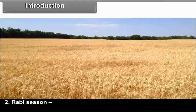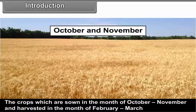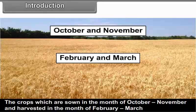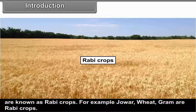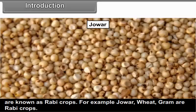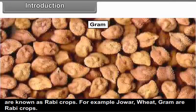Rabi Season: The crops which are sown in the month of October or November and harvested in the month of February or March are known as Rabi crops. For example, Jowar, Wheat, and Gram are Rabi crops.